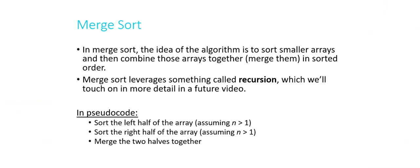In merge sort, the idea is to sort smaller arrays and then combine those arrays together — or merge them, as the name of the algorithm suggests — in sorted order. So instead of thinking about one six-element array, let's think instead that we have six one-element arrays, and then recombine them in the correct order. That's what merge sort does.